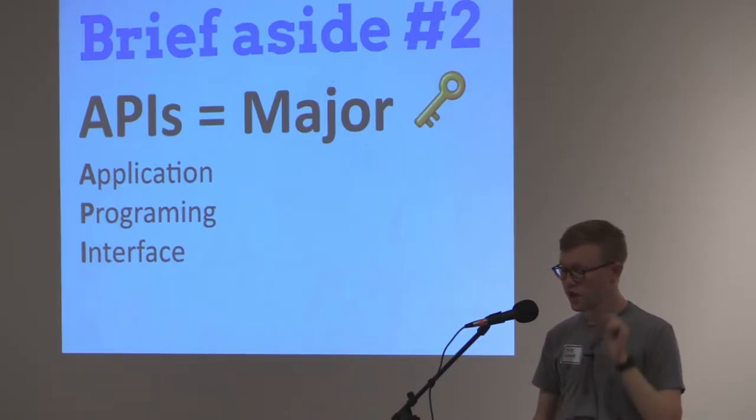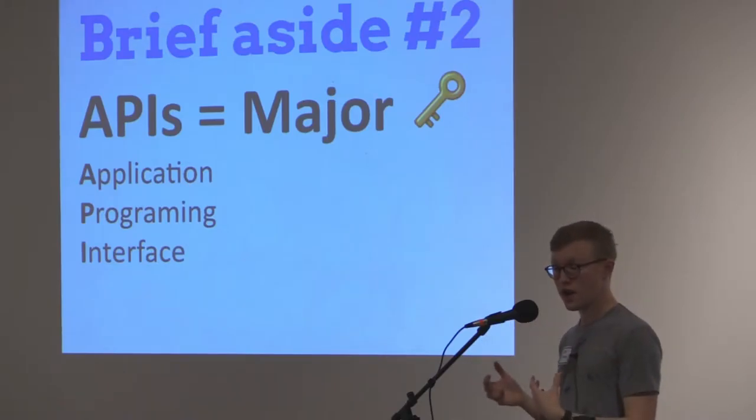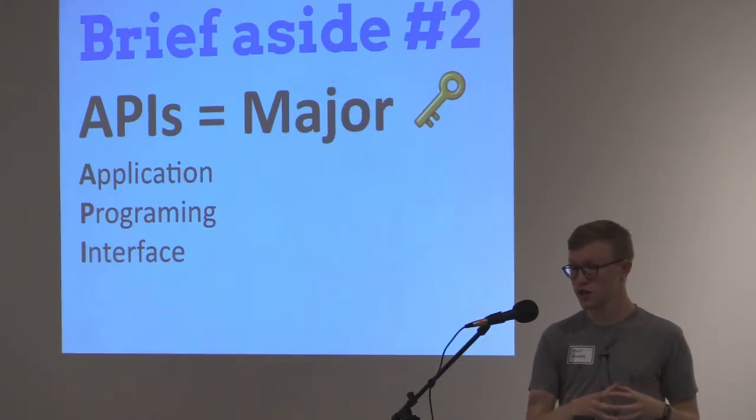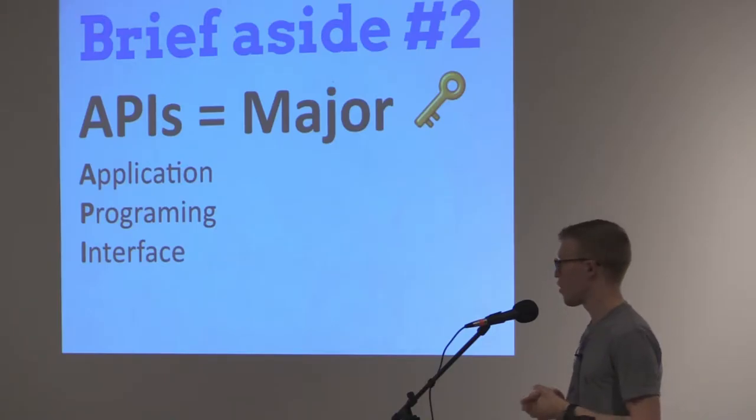Brief aside number two, APIs are a major key. With a lot of the data that I track, I use APIs to interface with my data securely to look at my data and reporting in new ways that are both insightful but also secure. So APIs are application programming interfaces and they allow other analytical websites to access secure data from say your bank or your running profile or whatever your data is stored. It allows these third party sites to access your data and do cool stuff with them.